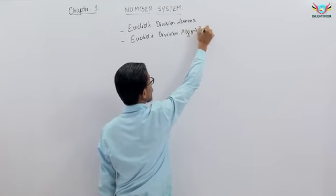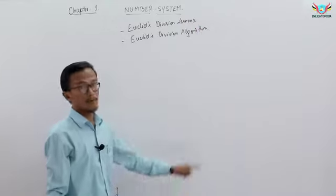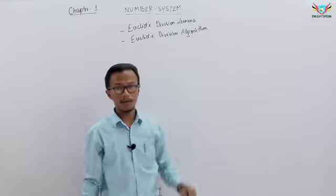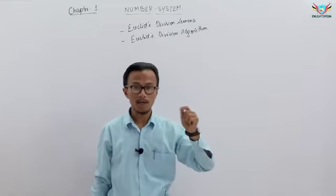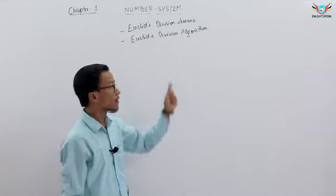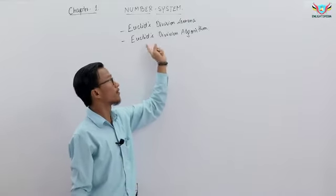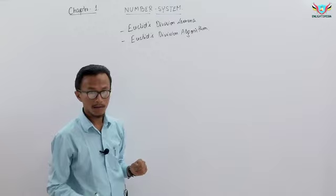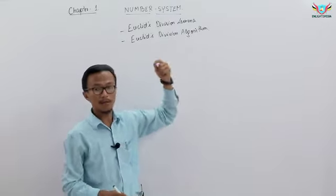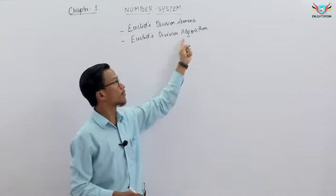Now what is the difference? Lemma means division, and algorithm. The lemma and the algorithm are two different subtopics. After Euclid's division lemma we have Euclid's division algorithm, and we'll see higher usage of these methods.